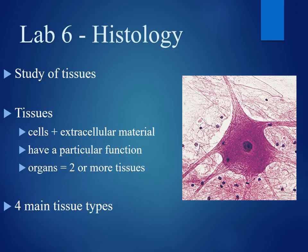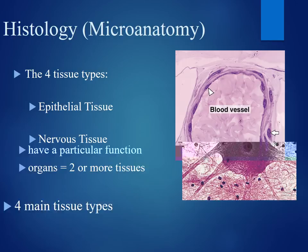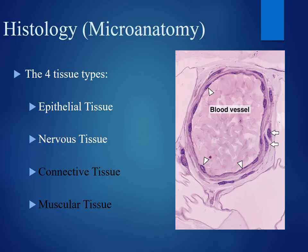In this A.V. lecture, we're going to be discussing the four main types of tissue in the human body. Our four main tissues are epithelial tissue, nervous tissue, connective tissue, and muscular tissue. In this part of the A.V. lecture, we're going to be focusing on epithelial and nervous tissue.